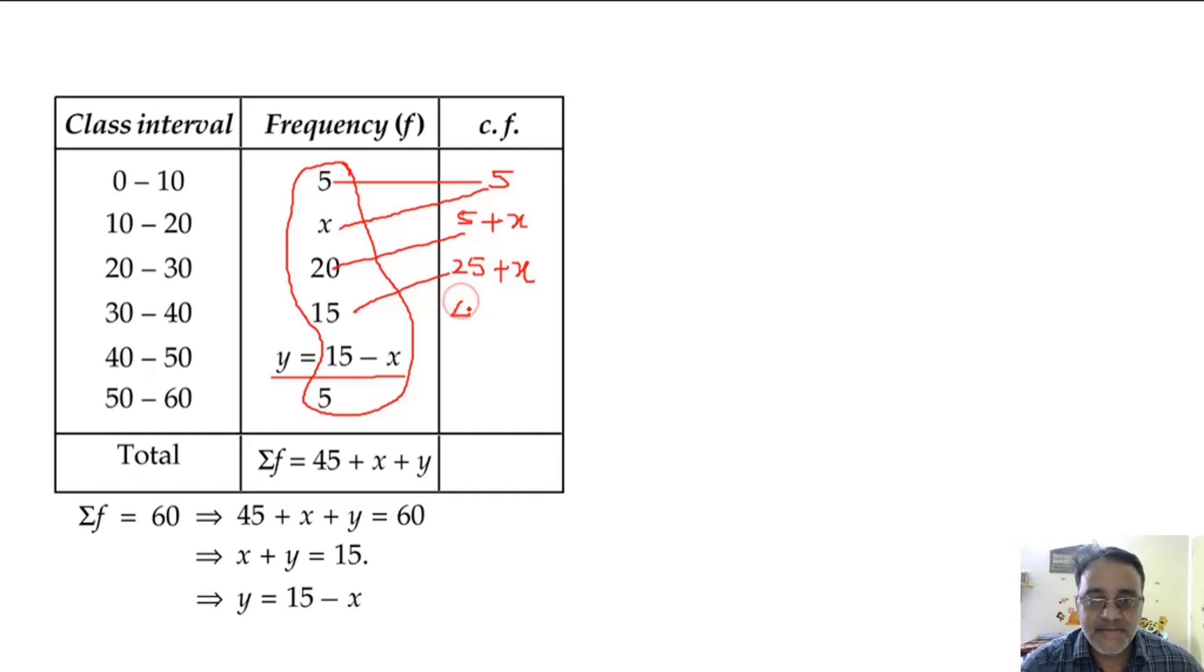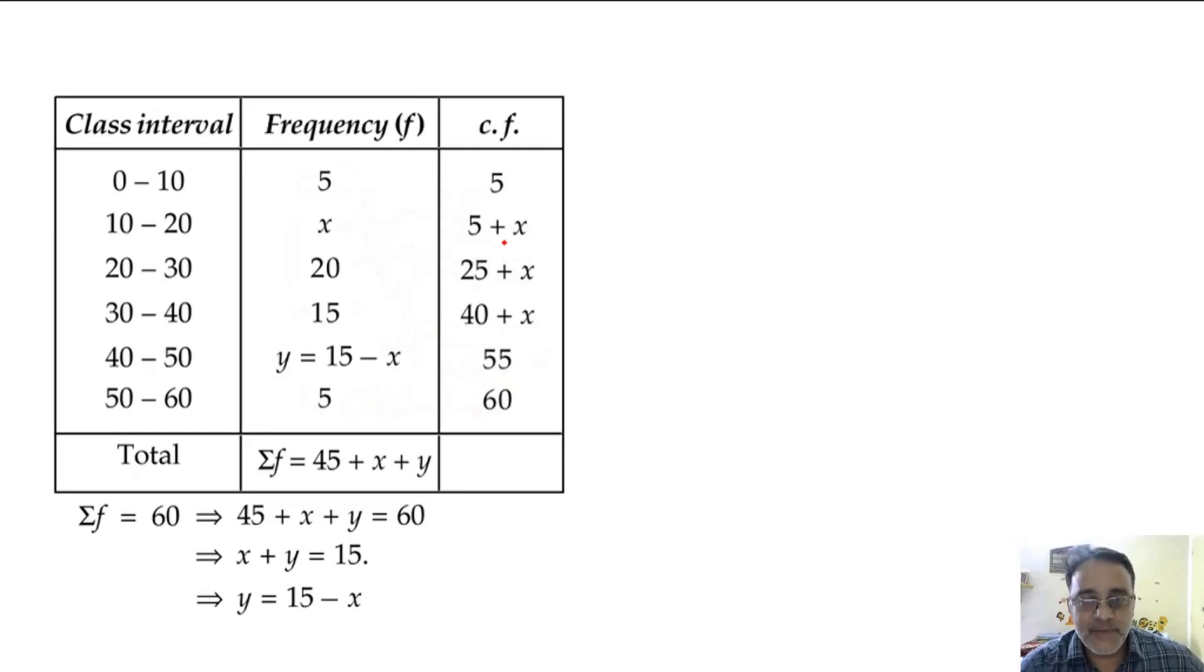And when you add these two, y is 15 minus x, so plus x and minus x cancel, and what we will get? 55 only. And the last one is? 60. Whether this is clear to all of you? Yes sir. So we will get 5, 5 plus x, 25 plus x, 40 plus x, 55 and 60.